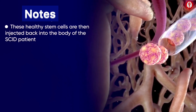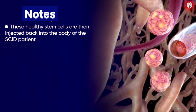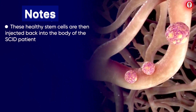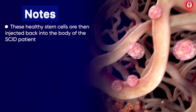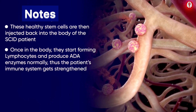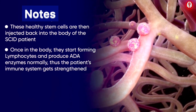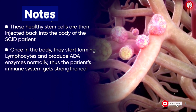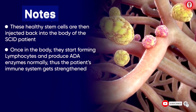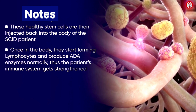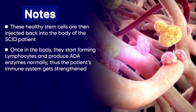These healthy stem cells are then injected back into the body of the SCID patient. Once in the body, they start forming lymphocytes and produce ADA enzymes normally. And thus, the immune system of the patient gets strengthened.